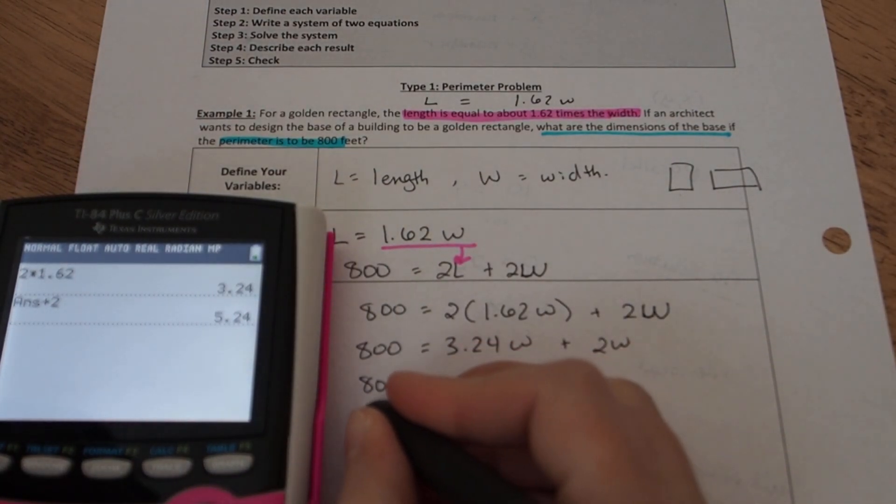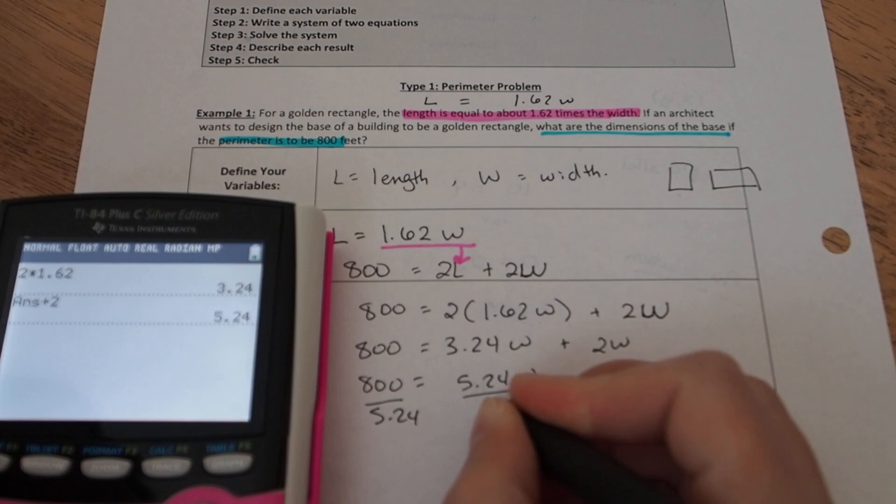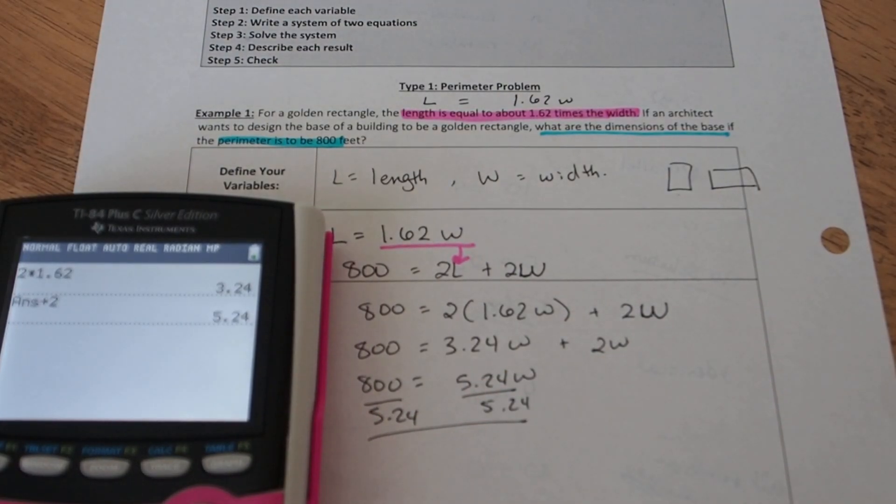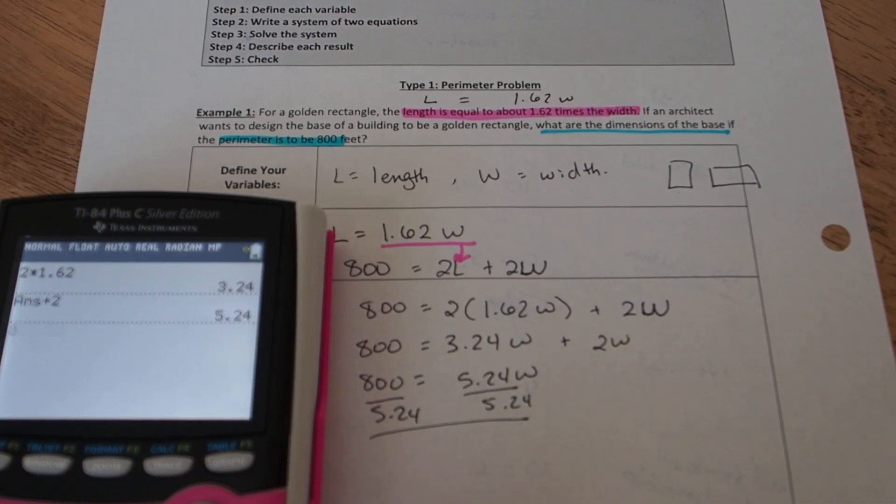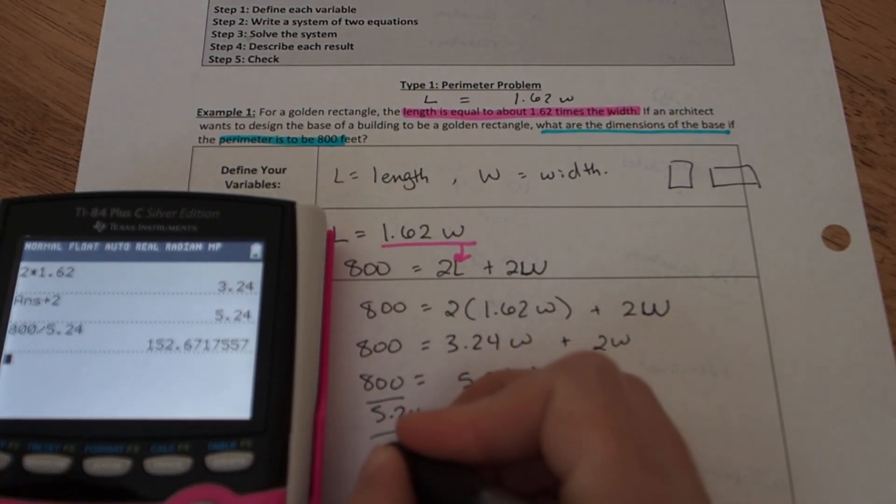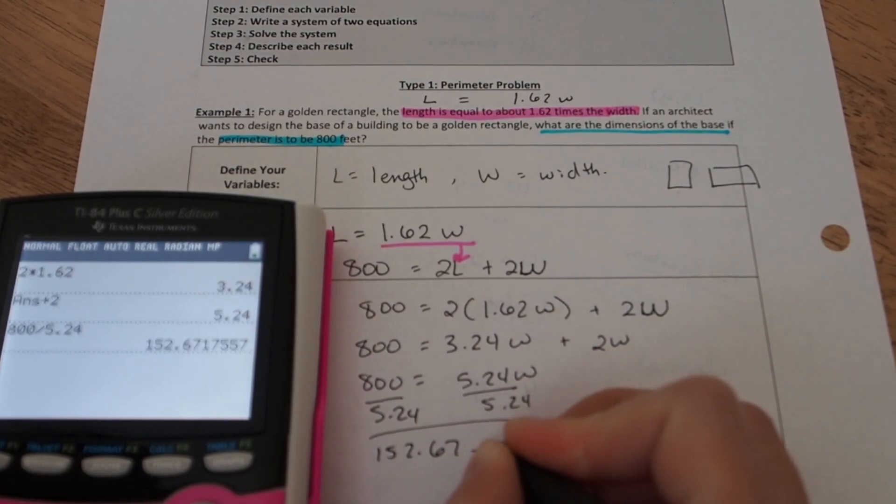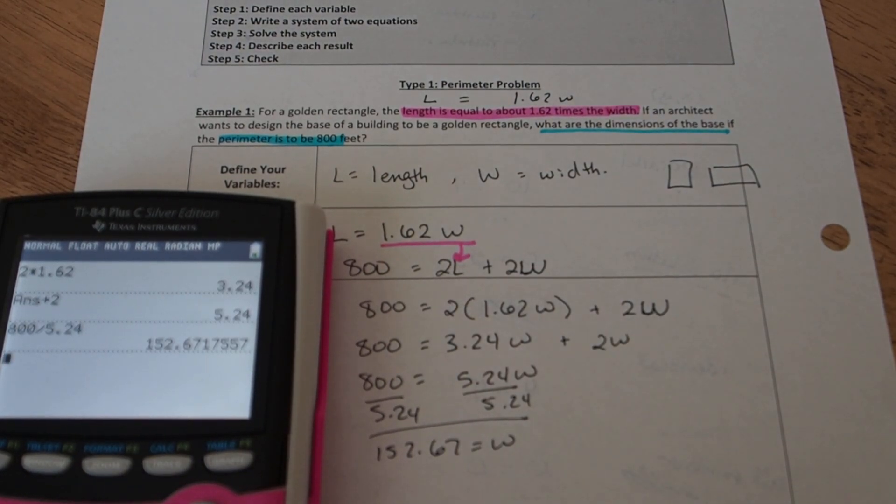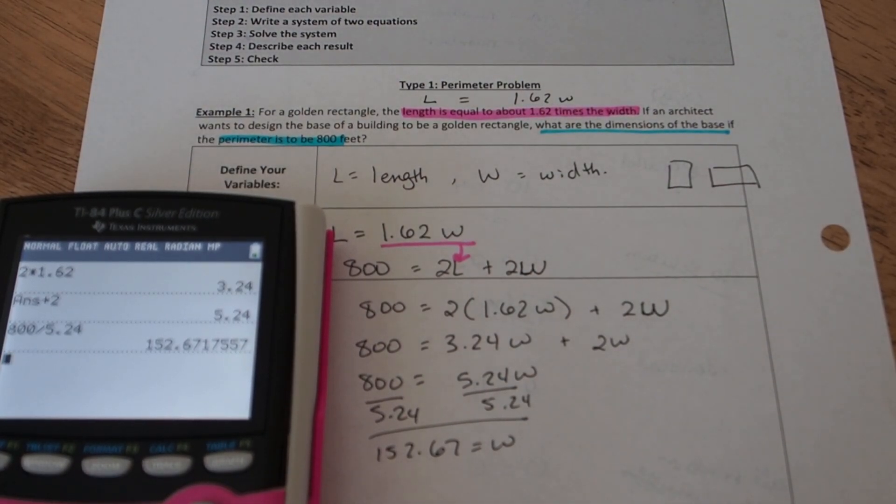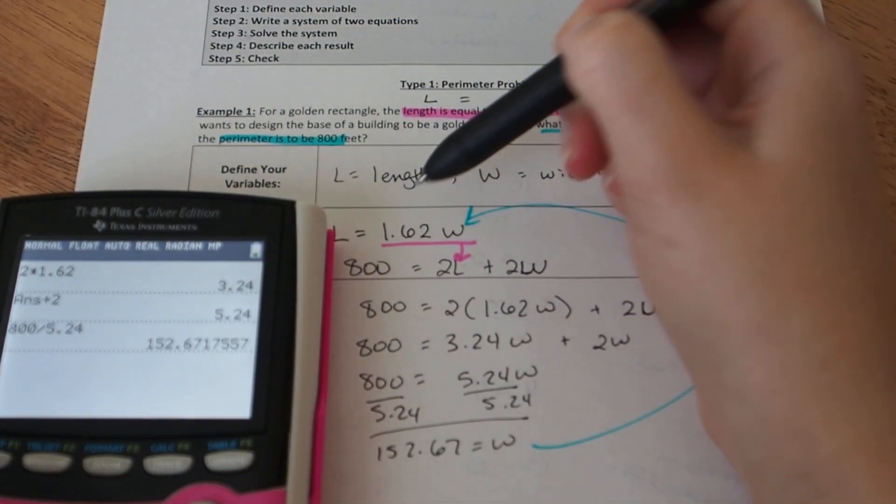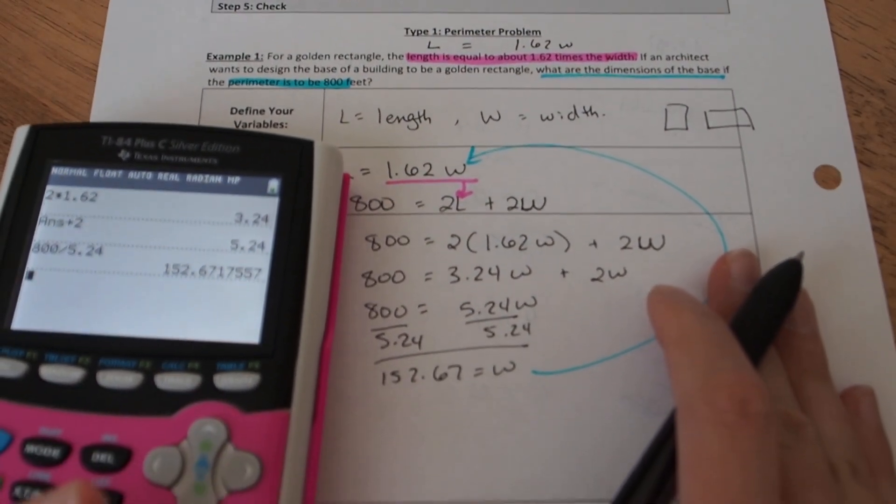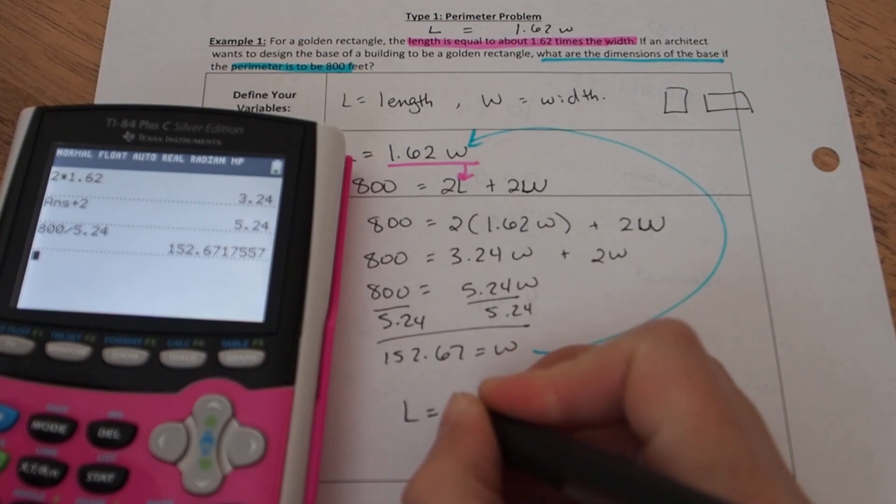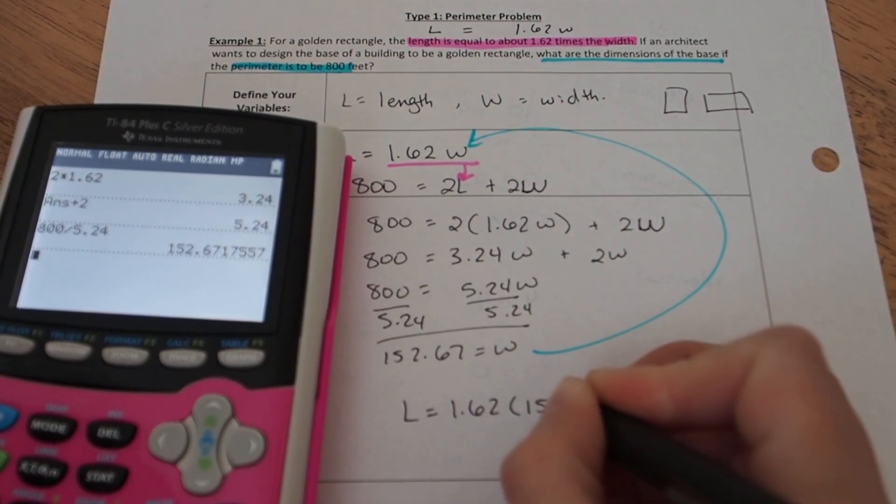Now divide both sides by 5.24, we're going to get 152.67 equals W. So W is 152.67, rounded to two decimal places, and then we will find our length. Coming back from the first statement, remember that once you find the W variable, you know that length was equal to 1.62W. So I can plug that back in. I know that length then is going to have to be equal to 1.62 times 152.67. So multiplying from the calculator by 1.62 gives us 247.33.